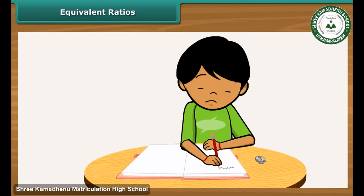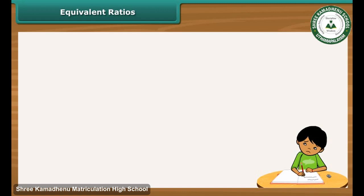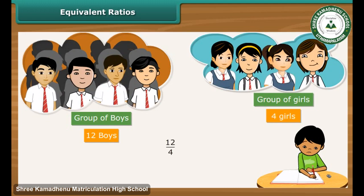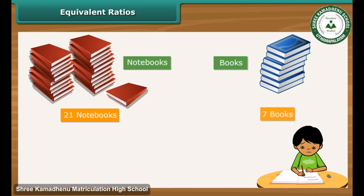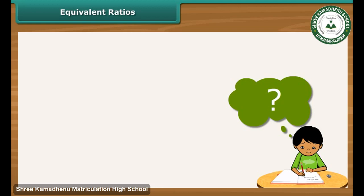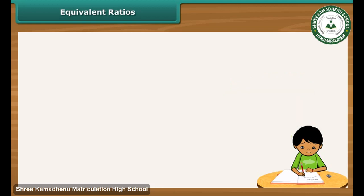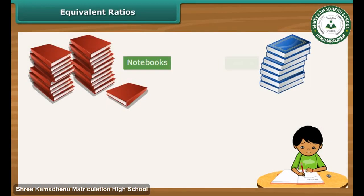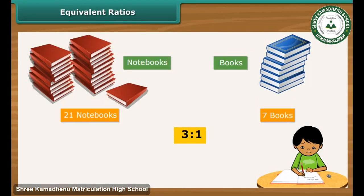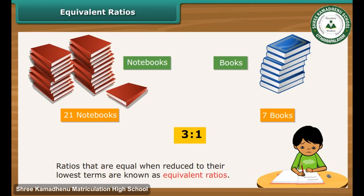Ritesh is learning to calculate ratios and enjoying it, but something is confusing him. He calculated the ratio of boys to girls in his class as 3 is to 1. He then calculated the ratio of notebooks to books in his bag, which also works out to 3 is to 1. Can two ratios be the same? Yes, they can. Boys are 3 times more than girls in his class, and notebooks are 3 times more than books in his bag. Ratios that are equal when reduced to their lowest terms are known as equivalent ratios.